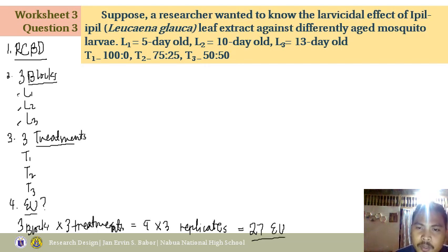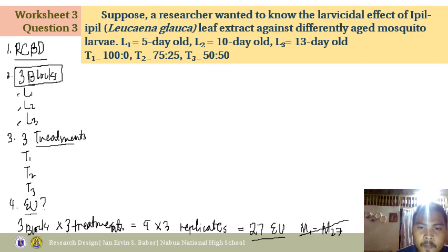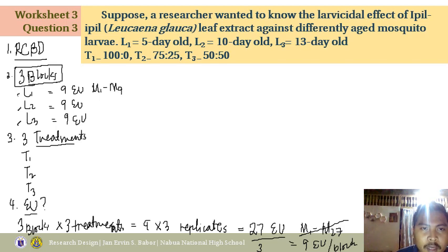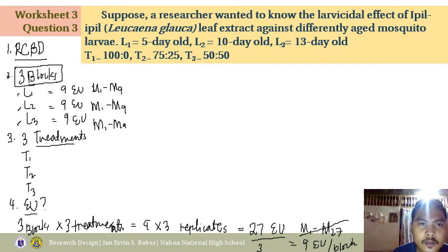You will not number the EU from M1 to M27 because of the presence of blocks. Instead, divide into 3 groups of 9, and label each block's EU from M1 to M9 separately. So each block — L1, L2, and L3 — has its own M1 to M9. Now let's lay out the RCBD.